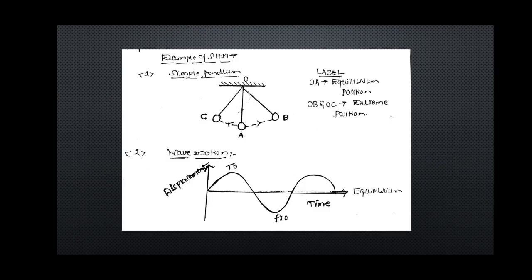An example of SHM is a simple pendulum. The motion of a pendulum is along the gravitational force — the body moves again and again along AB, BA, AC, and CA under earth's gravitational force. In the oscillation of a pendulum, there is displacement, velocity, and acceleration. There is an external force — the gravitational force — under which the pendulum moves. The up and down motion of a wave is also a periodic motion.